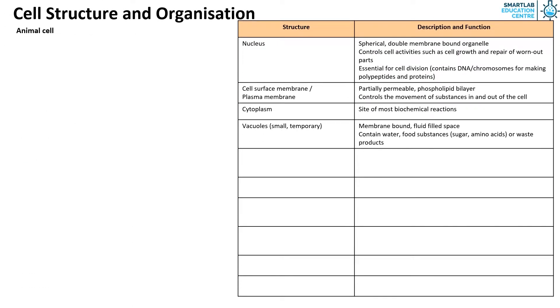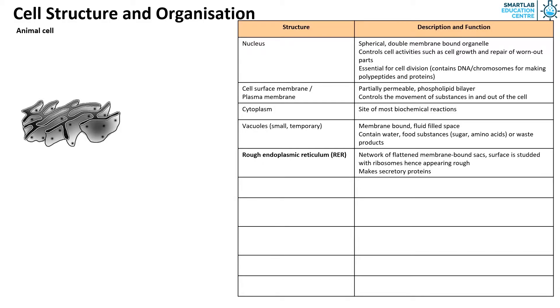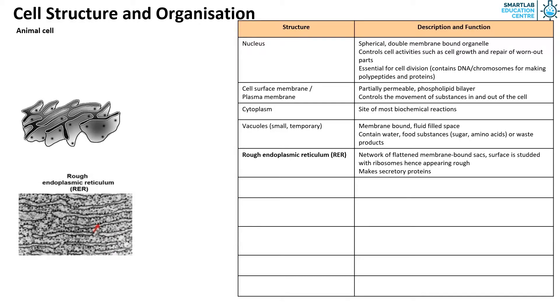The rough endoplasmic reticulum or RER is a network of flattened membrane-bound sacs, with its surface studded with ribosomes, hence appearing rough. In this electron micrograph you can see that for the RER there are dots attached to its surface. These dots are the ribosomes.